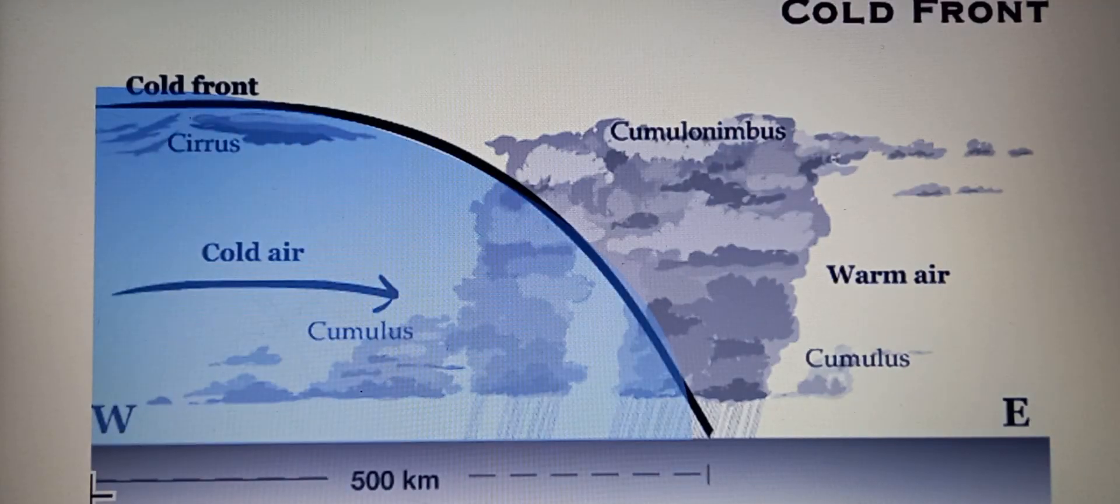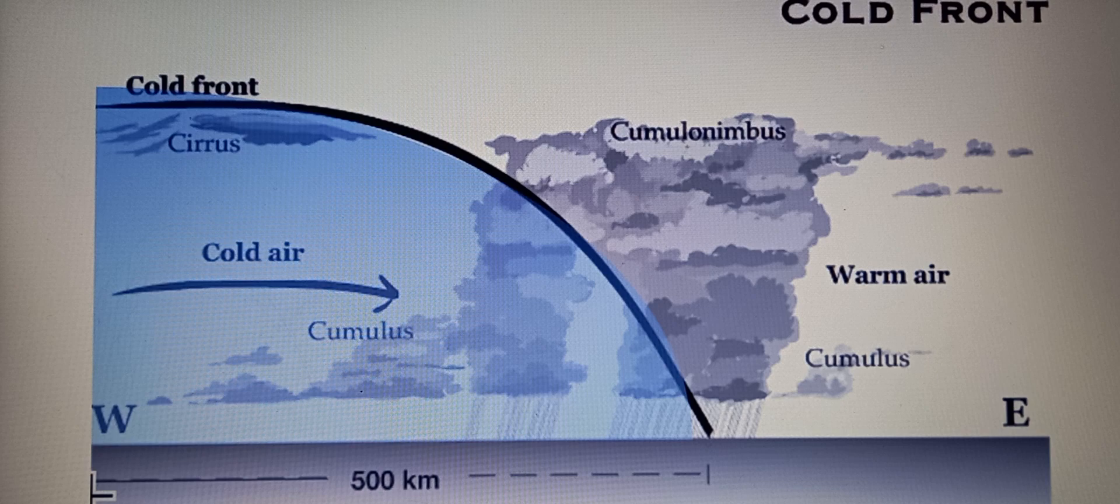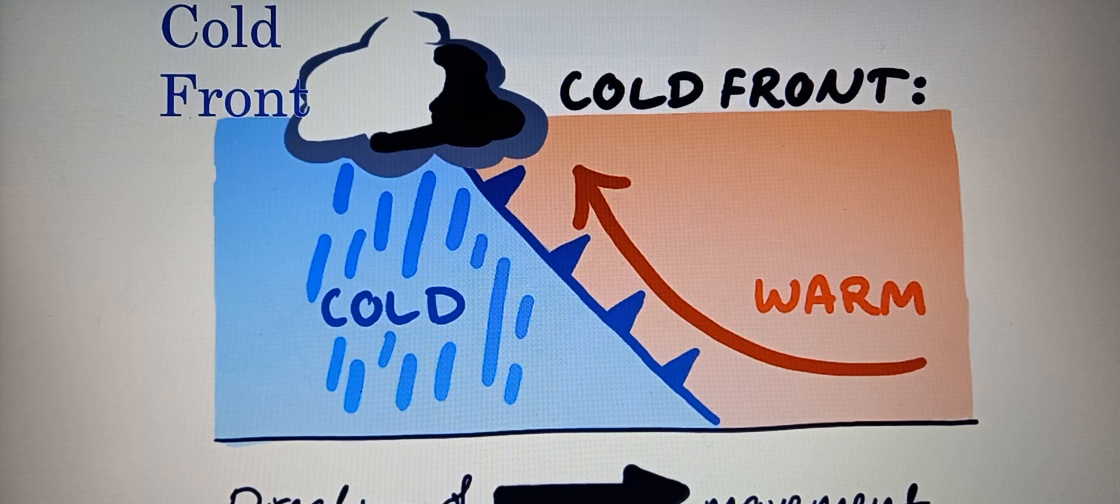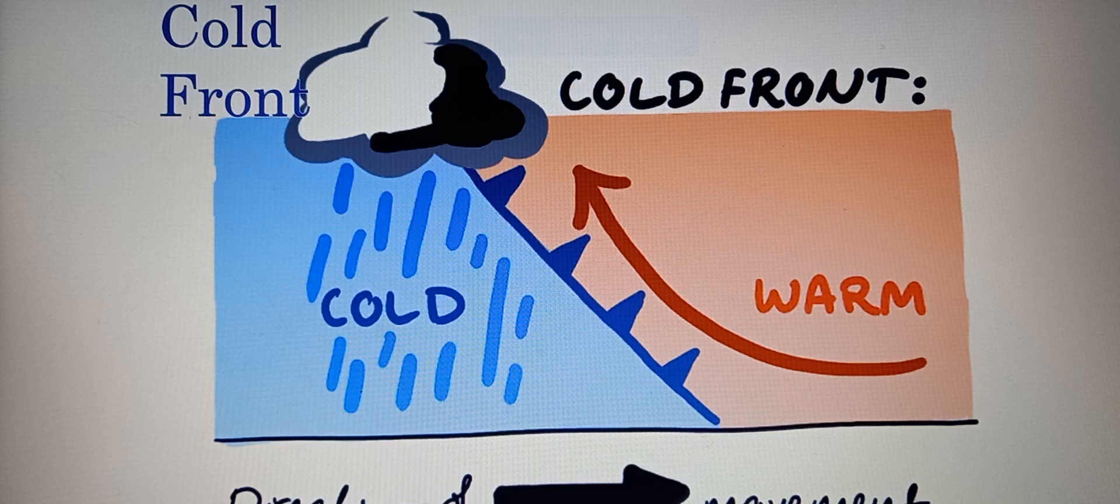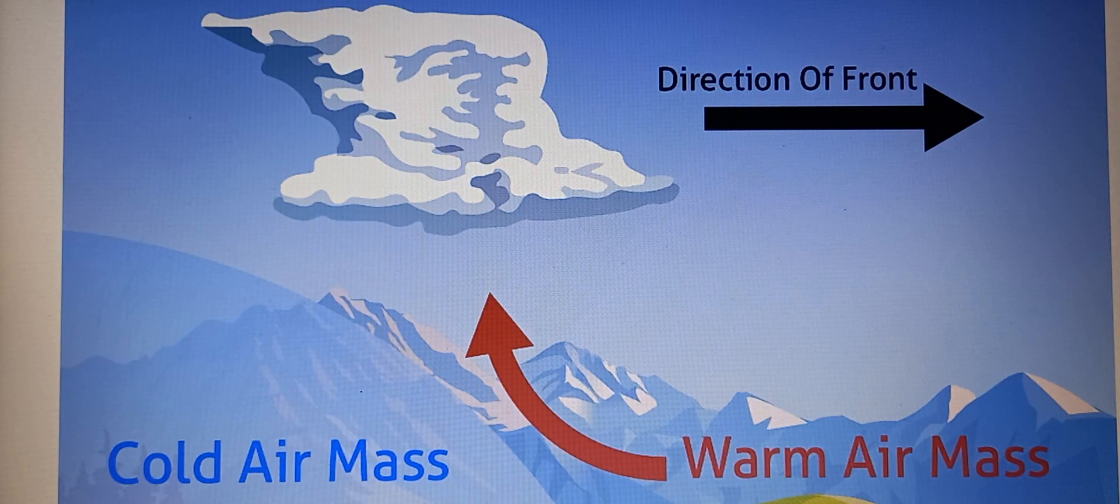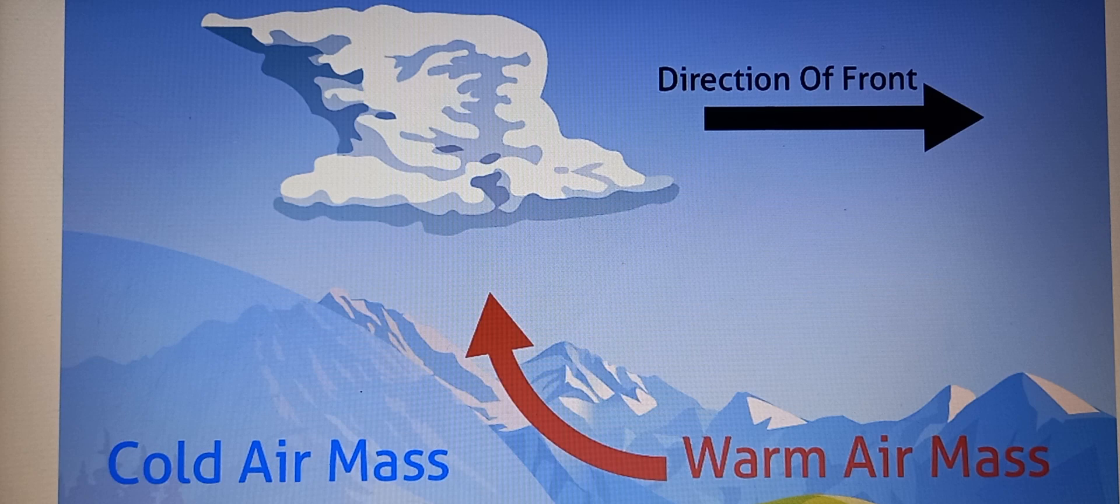It's a weather boundary formed when cold air masses push warm air masses away. When a cold front comes, warm air rises because it is less dense than cold air, cools, and makes clouds and rain. This brings sudden temperature drops, changes in weather like storms or rain, cloud formation, and pressure changes.